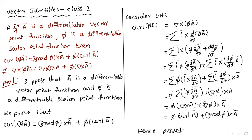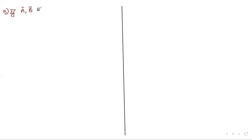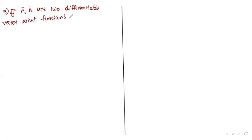Now one more identity — the fifth identity. If Ā and B̄ are two differentiable vector point functions, then grad(Ā·B̄) is a very very important identity.